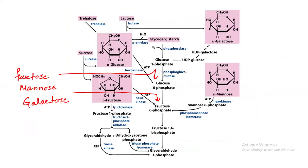To summarize the second route: fructokinase converts fructose to fructose-1-phosphate; fructose-1-phosphate aldolase cleaves the 6-carbon structure into two 3-carbon compounds. Dihydroxyacetone phosphate enters glycolysis, where triose phosphate isomerase converts it to G3P. Glyceraldehyde is first phosphorylated by triose kinase (glyceraldehyde kinase) and then enters glycolysis as glyceraldehyde-3-phosphate.